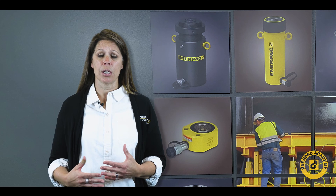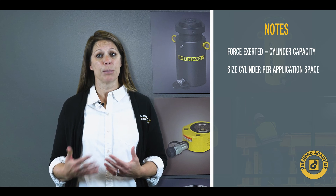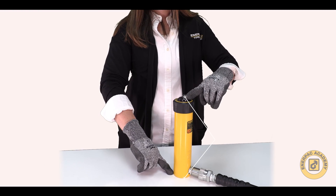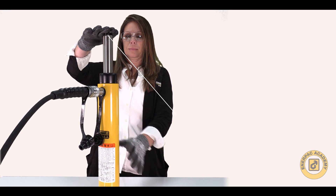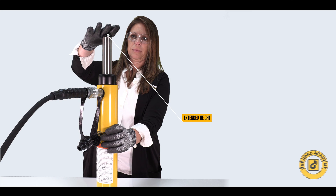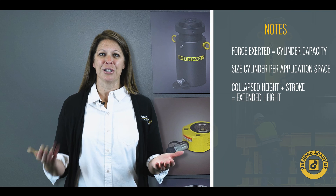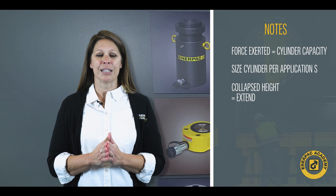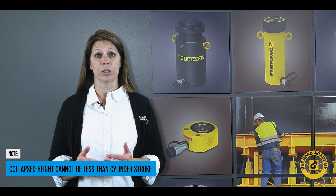When sizing a specific cylinder, one important factor is to select a cylinder that will fit into the application space. This usually requires a cylinder to not exceed a certain height. When the cylinder is fully retracted, its height is referred to as the collapsed height. When the cylinder extends to its maximum stroke, this height is referred to as the extended height. In other words, the cylinder collapsed height plus the cylinder stroke equals the cylinder extended height. Remember, the collapsed height cannot be less than the cylinder stroke.